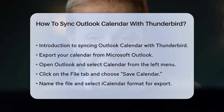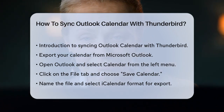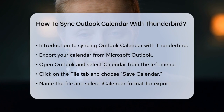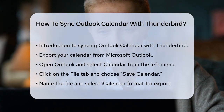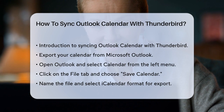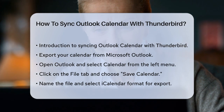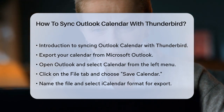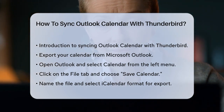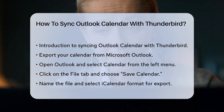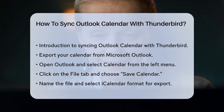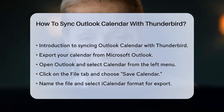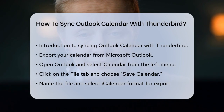First, you need to export your calendar from Outlook. Open Microsoft Outlook and select the calendar from the left-hand menu. Then click on the File tab in the toolbar and choose Save Calendar from the drop-down menu. Give your file a name, select the iCalendar format in the Save as Type section, and choose the whole calendar as the date range. Click Save to export your calendar.